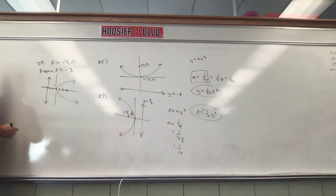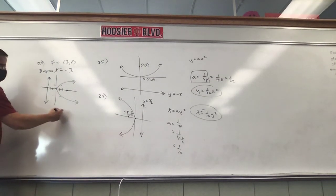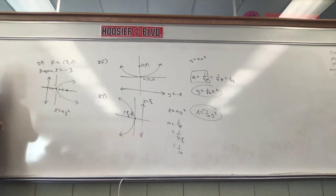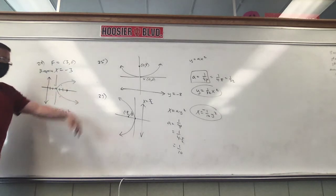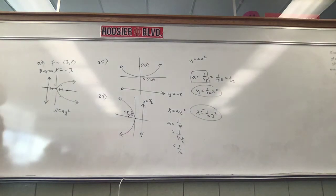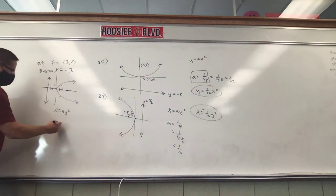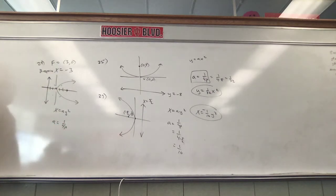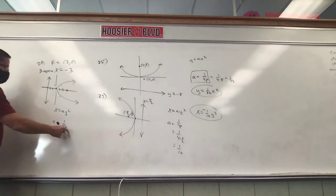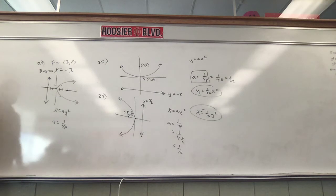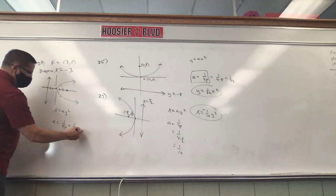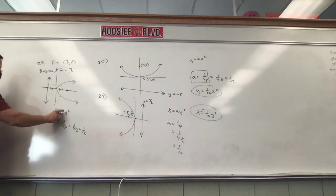Is this going to be y equals or x equals? X equals — whenever they open right or left, it's x. X is right-left, y is up and down. And we know a is some sort of positive number because it's going to the right. If it went to the left, it would be a negative number. So we use that formula again: a is 1 over 4p. p is either 3 to the right or 3 to the left — it doesn't matter, it's 3 either way. So 1 over 4 times 3 is 1/12. So x equals 1/12 y squared.